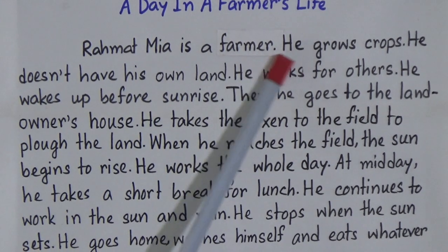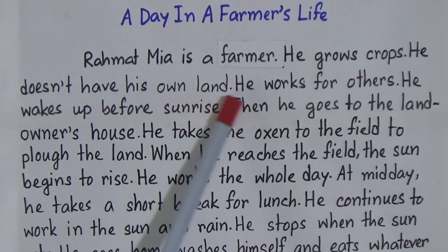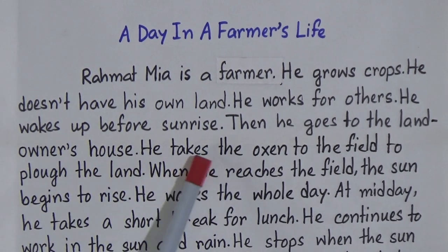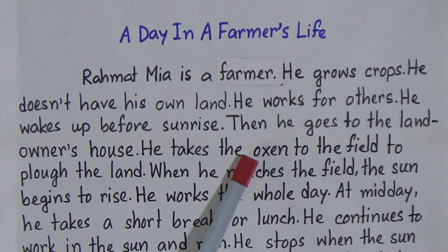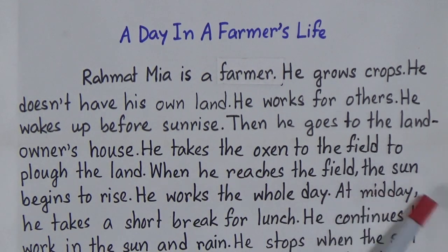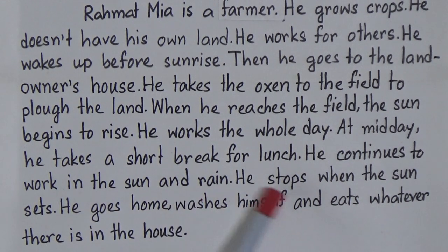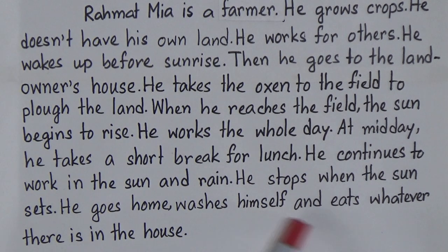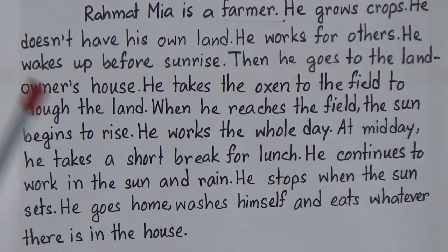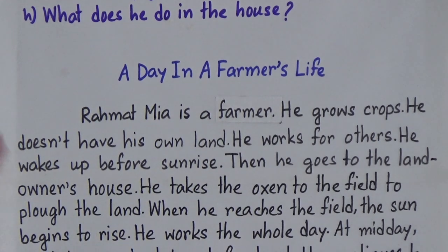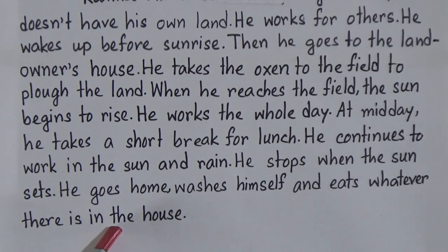Rahmat Mia is a farmer. He grows crops. He doesn't have his own land; he works for others. He wakes up before sunrise then goes to the land owner's house. He takes the oxen to the field to plow the land. When he reaches the field the sun begins to rise. He works the whole day. At midday he takes a short break for lunch. He continues to work in sun and rain. He stops when the sun sets. He goes home, washes himself, and eats whatever there is in the house.